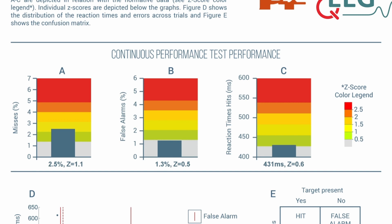In this example, the percentage of misses was 2.5 percent, which translates into a Z-score of 1.1. A Z-score of 1.1 means that the 2.5 percent misses is 1.1 standard deviations above the average of the norm. In the bar graph, Z-score ranges are depicted in different colors ranging from gray to red. The 2.5 percent falls into the yellow Z-score band, which ranges between 1 and 1.5. The color coding is explained in the Z-score color legend on the right of the page.